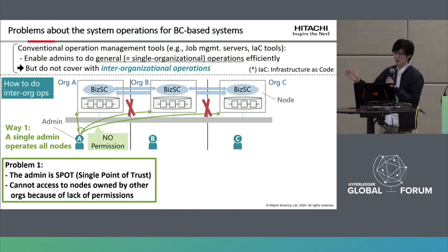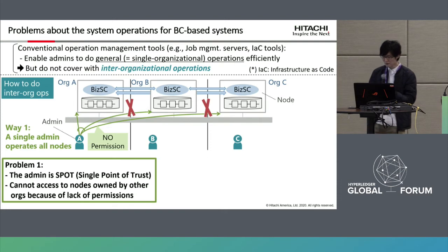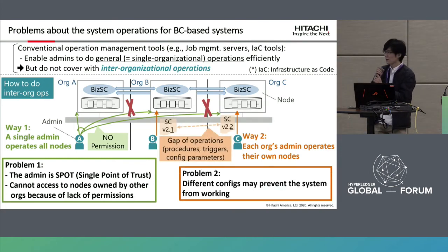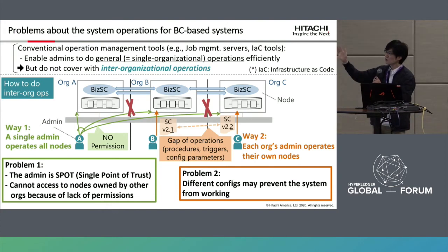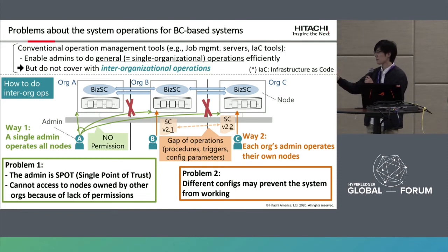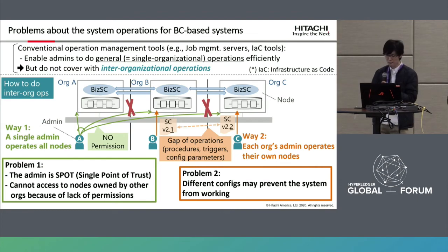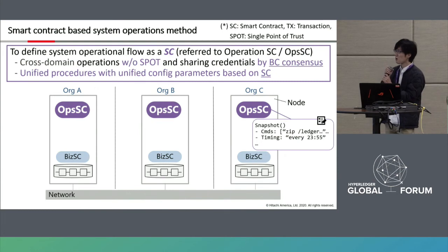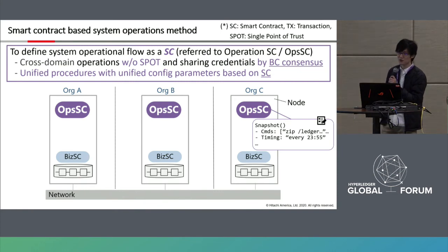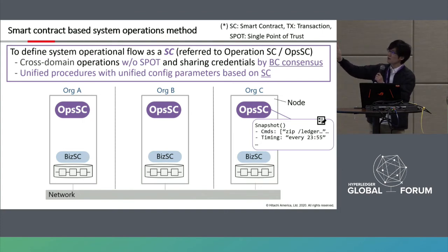Also, the admin cannot access nodes owned by other organizations due to lack of permissions. Another approach is each organization's administrator operating their own node, but this creates gaps in procedures and config parameters, which may prevent the system from working correctly. To solve these problems, we propose an operations execution method called smart contract-based system operation. The primary idea is to define system operational flow as a smart contract — referred to as an operation smart contract.